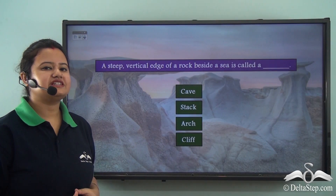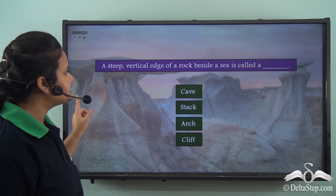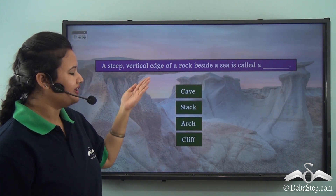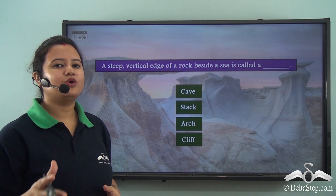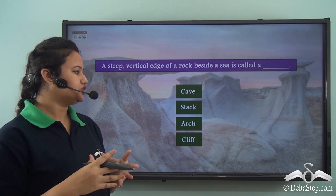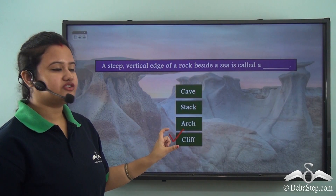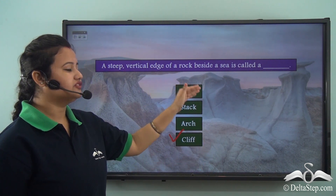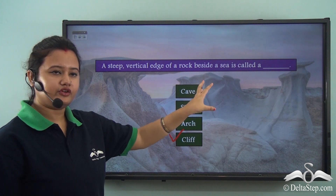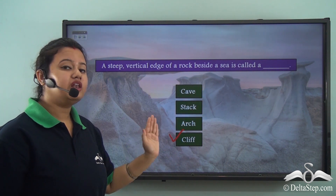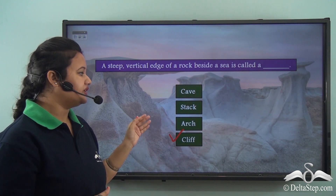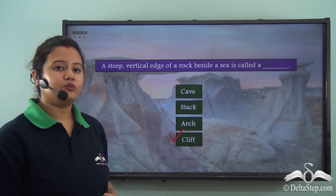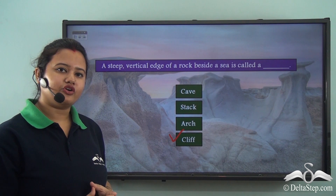Before proceeding, let us answer this: a steep vertical edge of a rock beside a sea is called a cave, stack, arch, or cliff? The correct option is cliff. A cliff refers to the vertical edge of a rock beside a sea. A cave refers to hollow depressions formed on the rock. A stack refers to wall-like structures in the middle of a sea. An arch refers to hollow structures with a roof.